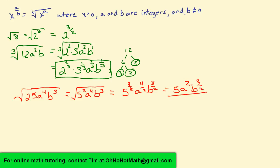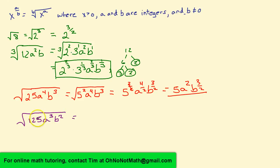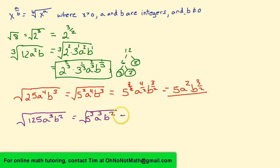Let's do one more example: the square root of 125a cubed b squared. Let's factor 125 in terms of its prime factors — that would be 5 cubed times a cubed times b squared, with the square root of all of that. So that's going to give us 5 raised to the power of 3 over 2, a raised to the power of 3 over 2, and b raised to the power of 2 over 2.